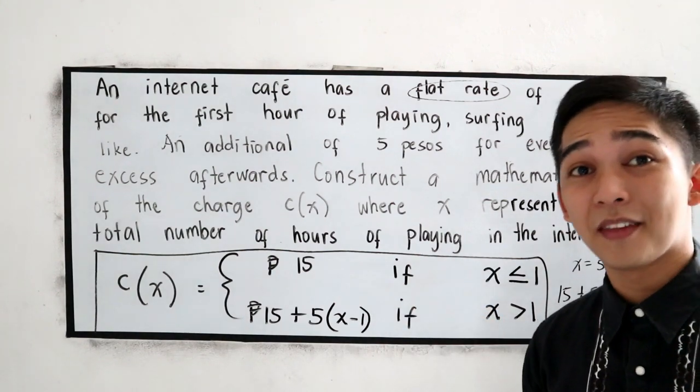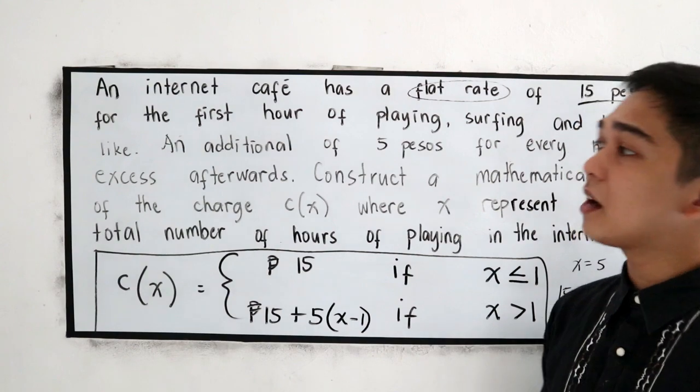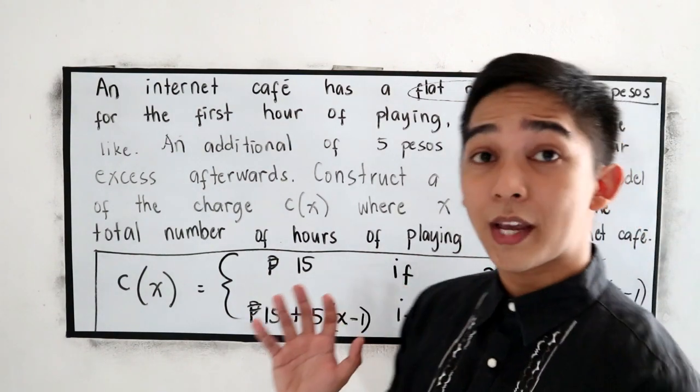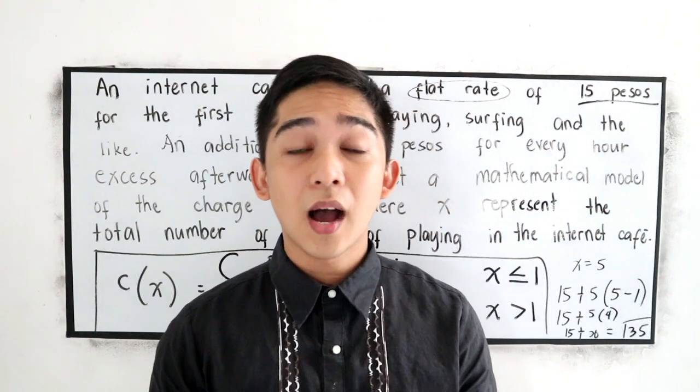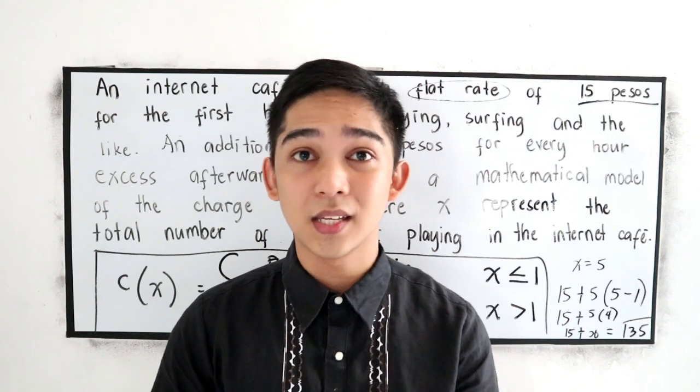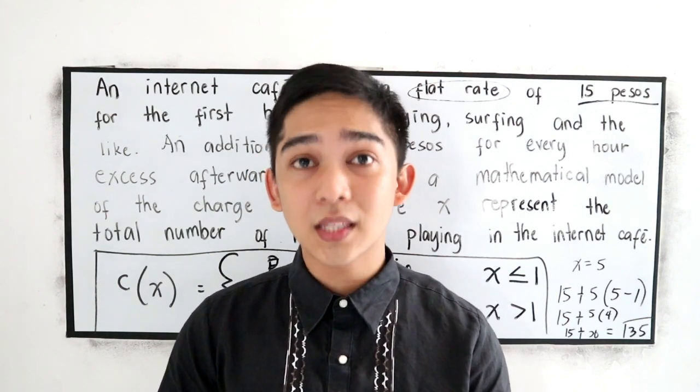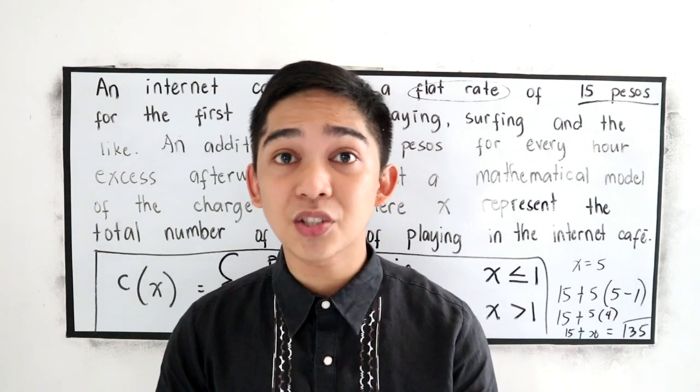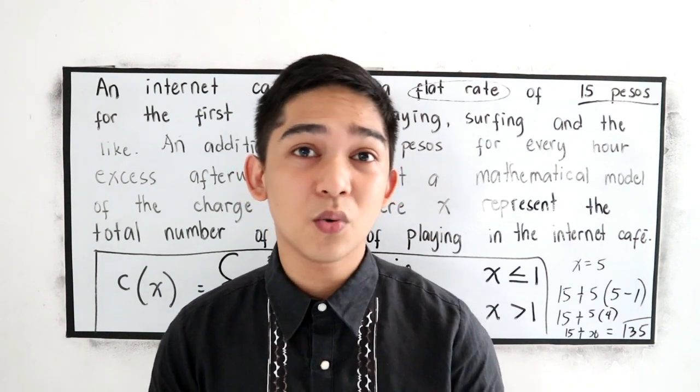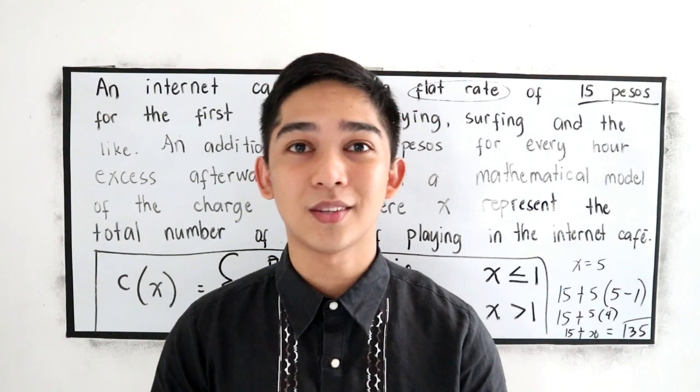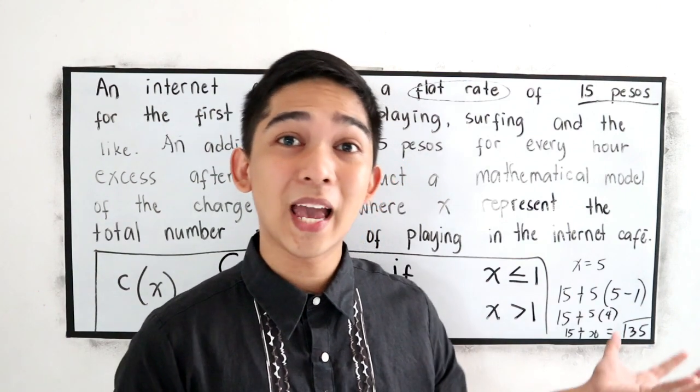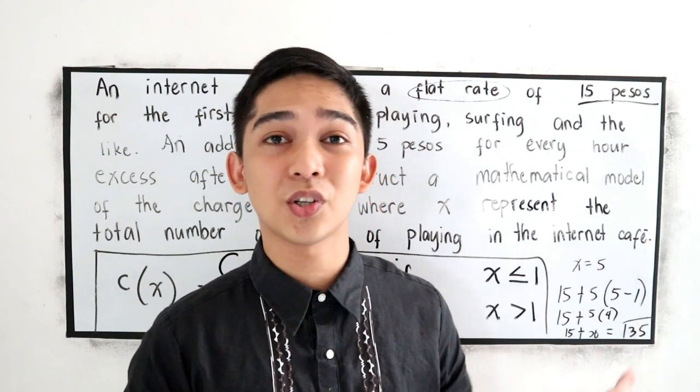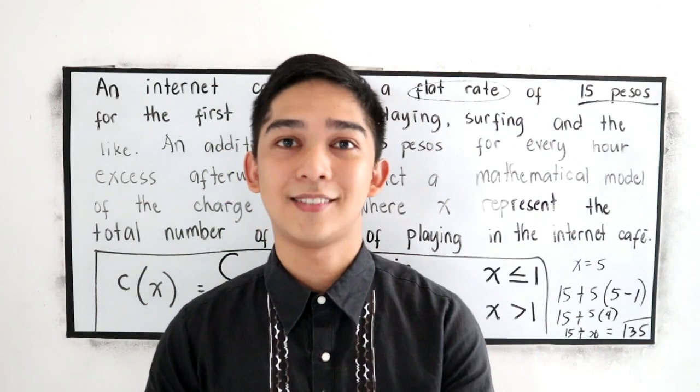So ito na ngayon yung ating mathematical model. Ganun lang. Medyo mahirap si piecewise function talaga kasi papasok na dito yung inequality, which is yung inequality ay nasa chapter 2 ninyo under the rational expressions, rational inequalities, and rational equation. Kaya ma-encounter nyo muna si piecewise function bago kayo pumunta kay rationales.